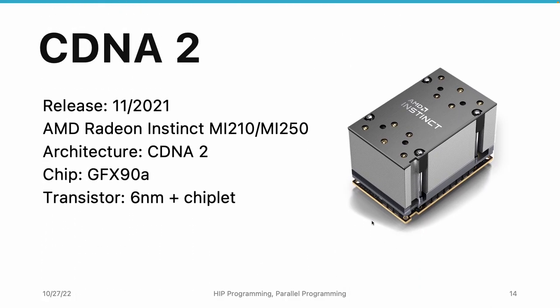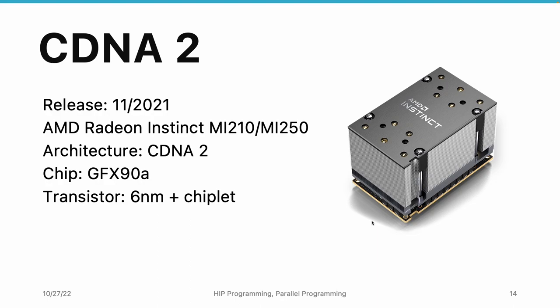More recently, in November 2021, AMD released the MI210 and MI250 GPUs — they are very similar. As you can see, these GPUs look very different from previous generations, though the chip is not entirely different. The chip is named GFX90A, where A is the hexadecimal number representing 10 — the 10th revision of the GFX9 series. The architecture is CDNA 2. It is a big technology transition because it uses 6nm technology and also uses chiplet technology. Multiple chiplets within one large GPU package can provide much higher computing capability than a traditional single-chip GPU. Because of the chiplet technology, this GPU can consume much more power and generate much more heat, which is why it needs a much larger heatsink on top of it.